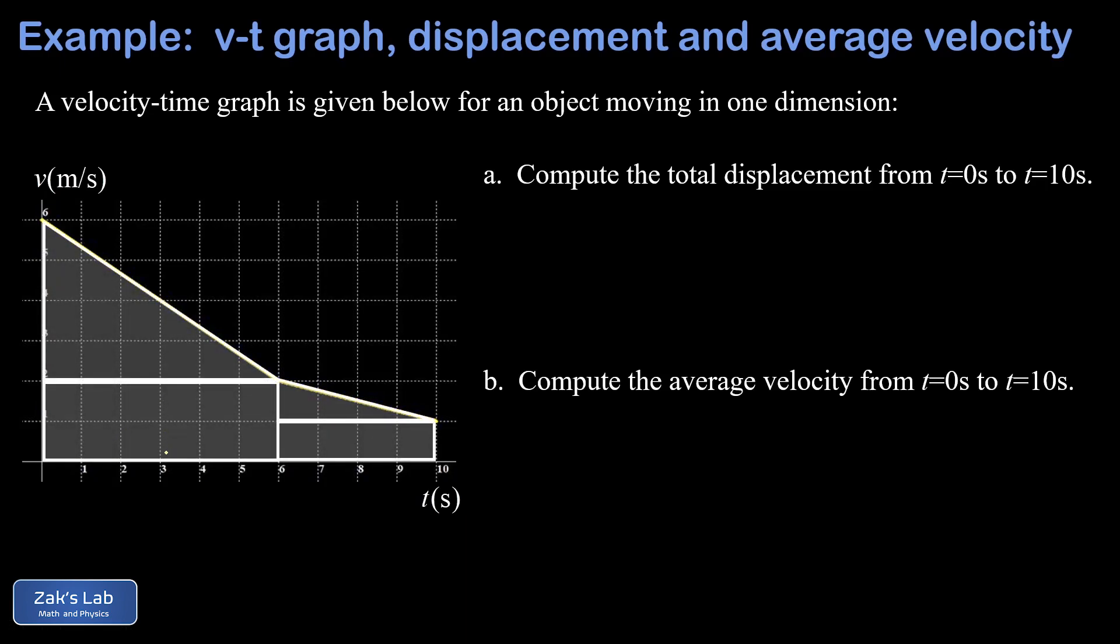Now we just have to find the areas of all of these things. I'll start with our big rectangle here that has a width of six seconds and a height of two meters per second. When we multiply those, we get 12 meters.